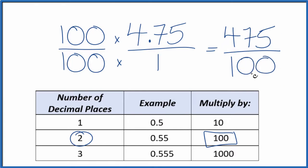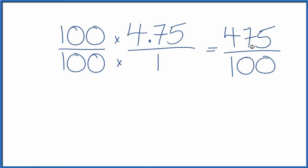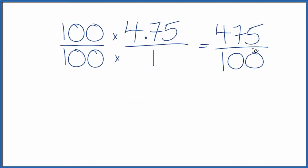But we can simplify this, and then we can write it as a mixed fraction as well. Let's give ourselves some room. So I know that 475 and 100, these are both divisible by 25. So if I divide 475 by 25, I end up getting 19. If I divide 100 by 25, I get 4. So I end up with 19 fourths as my simplified fraction.